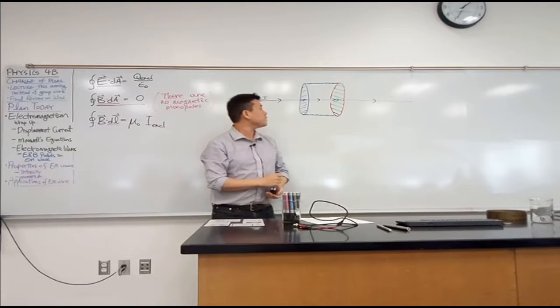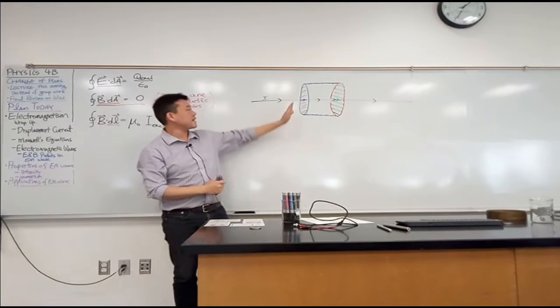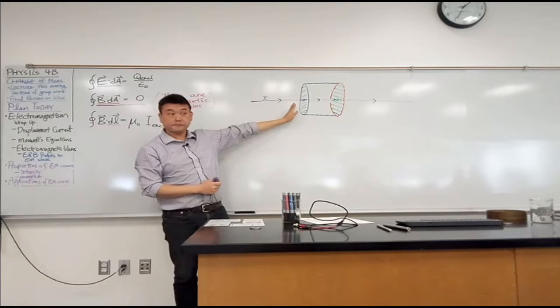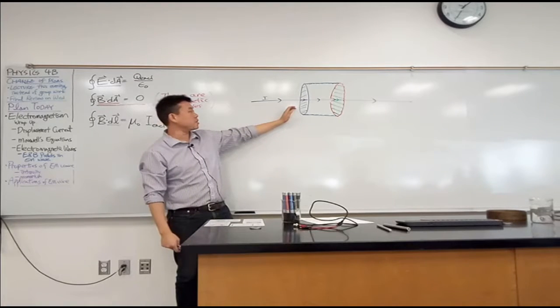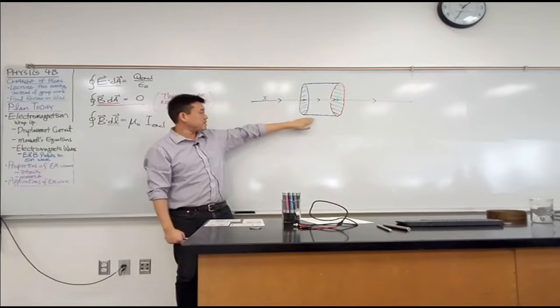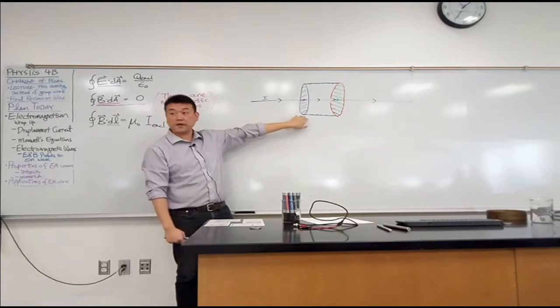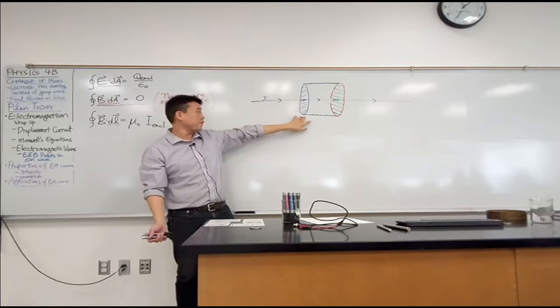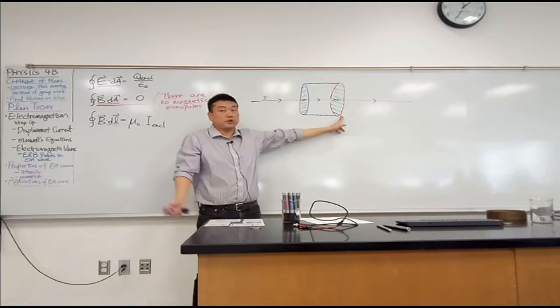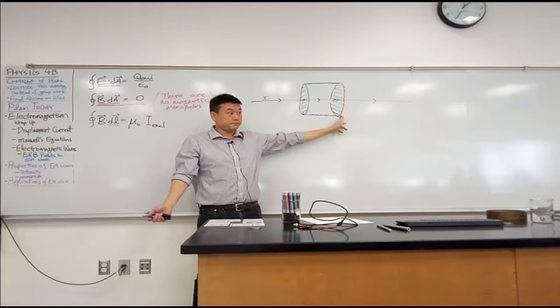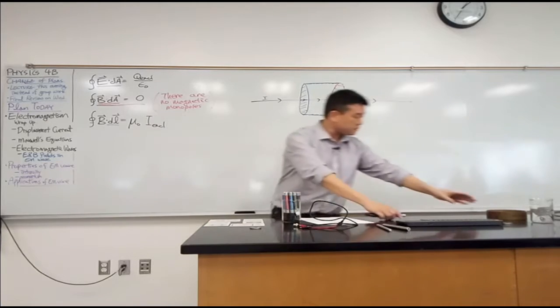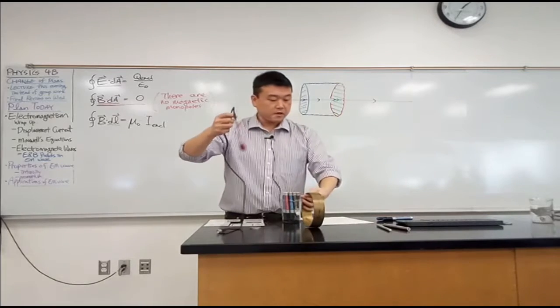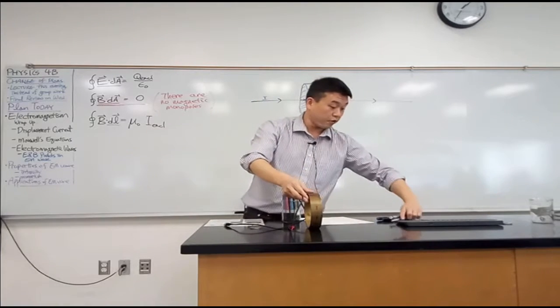So, the question here is then, does this ambiguity matter? As in, can you come up with a situation where using this surface, you would say a current is enclosed. But, using this surface, you would say current is not enclosed. So, let's think through a couple examples.